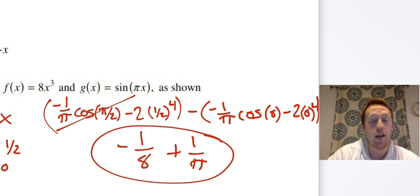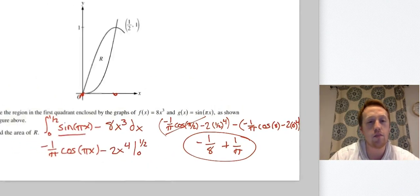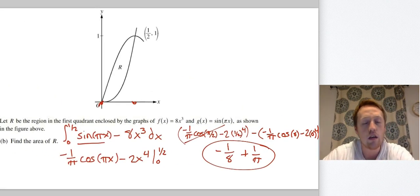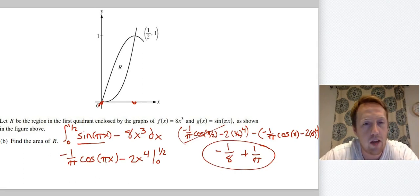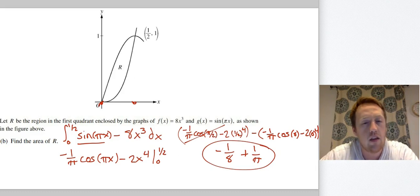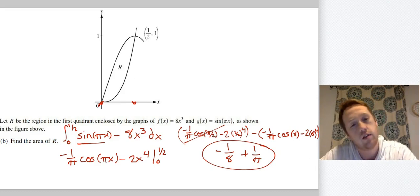That antiderivative shortcut saves so much time. Please start working on it if you're not already. If chain rule multiplies by a constant, the antiderivative multiplies by the reciprocal of that constant.